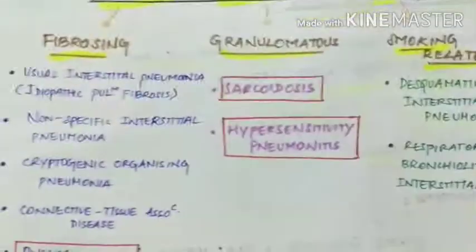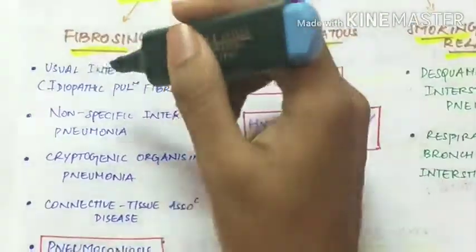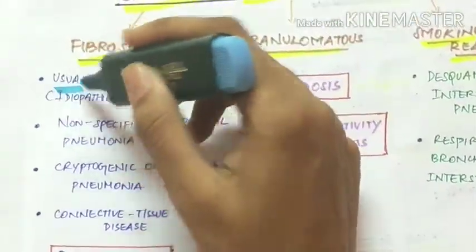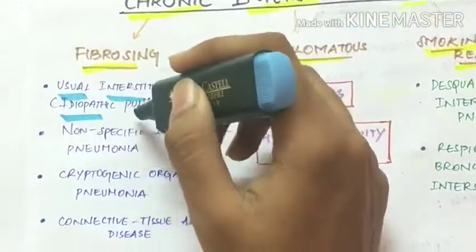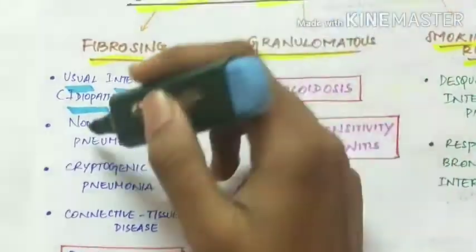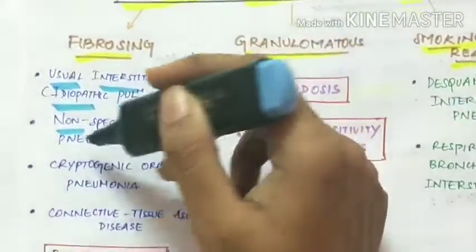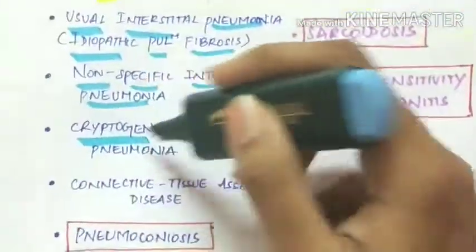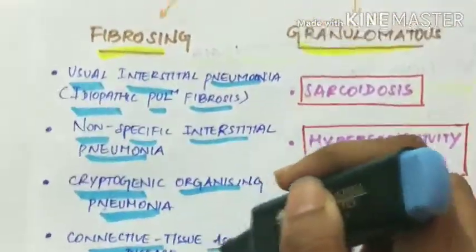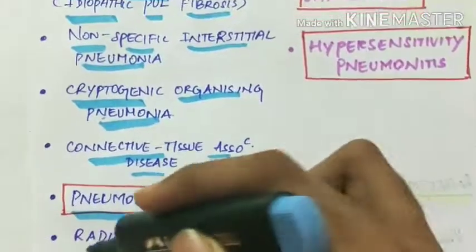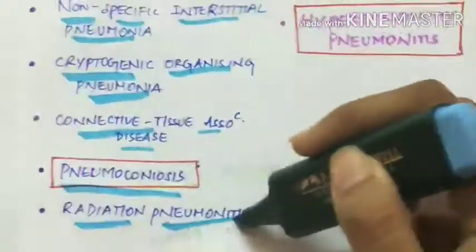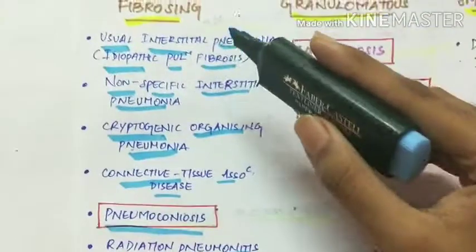Fibrosing lung diseases include usual interstitial pneumonia also called idiopathic pulmonary fibrosis, non-specific interstitial pneumonia, cryptogenic organizing pneumonia, connective tissue associated disease, pneumoconiosis, and radiation pneumonitis. These are the major fibrosing chronic interstitial lung diseases.